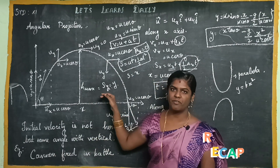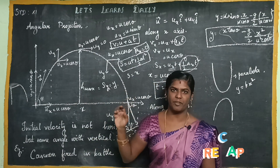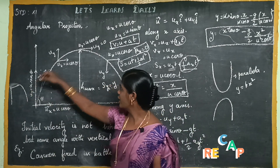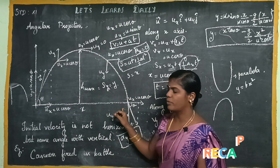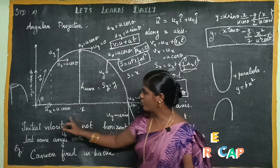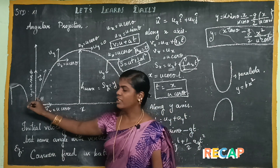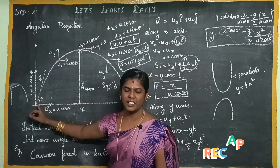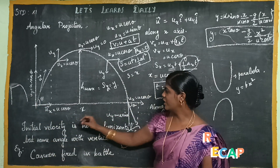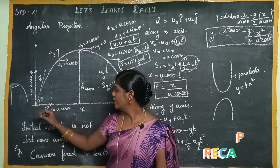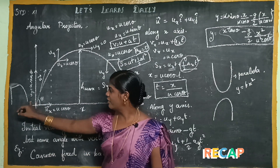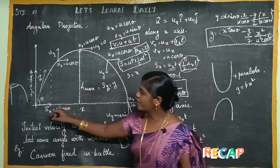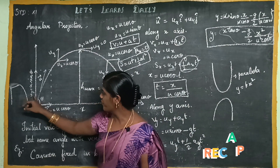We can derive the equation of motion. You can follow the path in the angular projection. You can make a horizontal angle — that is theta. The two velocities vary: in the x-axis, the velocity is u cos theta; in the y-axis, u sin theta.